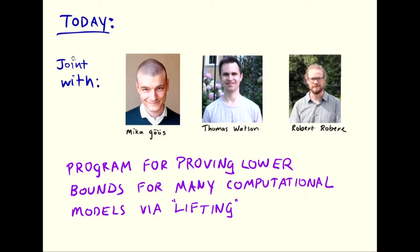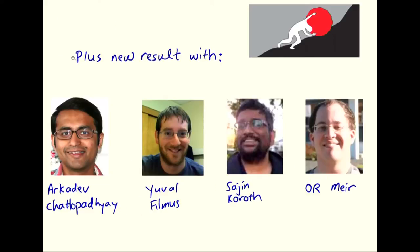Most of the stuff I'll be talking about, at least for the first 40 minutes, is joint work with Mika Goose, who was a PhD student of mine, Tom Watson, who was a postdoc, and Robert, who was also a student of mine. This is a program to prove lower bounds for stronger and stronger computational models. I'll also talk about a new result obtained at the Simons Institute, working with Arkadev, Yuval Filmes, Sajin, Koroth, and Oromir.